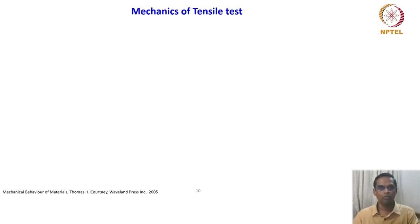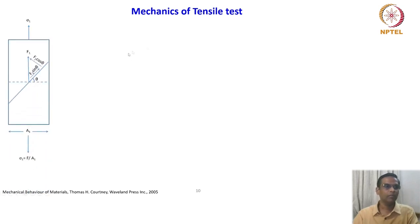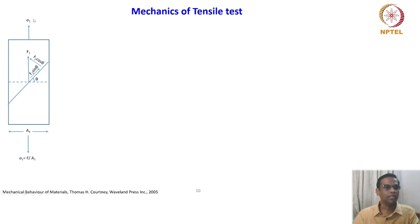We will now move on to the next important mechanical test: the tensile test. Before getting into the results and description of what kind of data you will get, we will also look at the mechanics aspect of the tensile test. A tensile test is normally conducted on a cylindrical bar or a plate with a specific geometry. Here we are simply taking a rectangular bar or a sheet in 2D and subjecting them to a tensile force, where the area of cross section is A₁ and the tensile force is F₁.